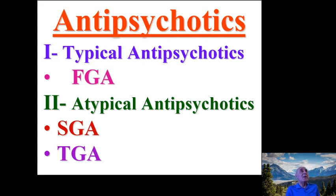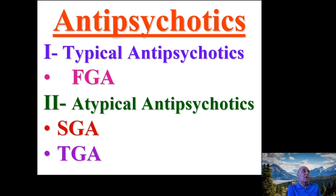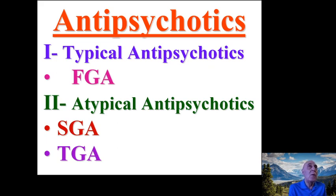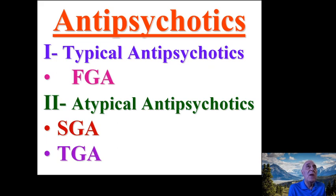Drugs used to treat schizophrenia are called antipsychotics because schizophrenia was previously known as psychosis. There are different classes: typical antipsychotics, also known as first-generation antipsychotics, which are older medications still in use, and atypical antipsychotics including second-generation and third-generation antipsychotics, which are more commonly used nowadays.